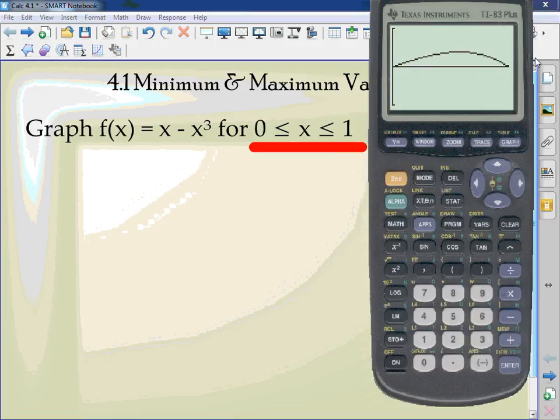We want to know what's the maximum value in just this region. How can I find the maximum value? Second, trace, 4. I need a left bound and right bound. I know it's in between... Or sorry, 0. Put my left bound as 0. My right bound as 1. I know it's in between both of these. I don't care what the guess is. Press enter. My maximum's at 0.577, 0.385. Yeah, it tells you both.